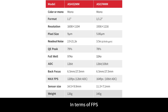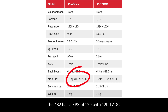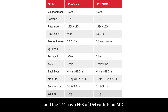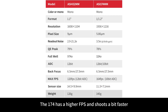In terms of frames per second, the ASI-432 has 120fps with a 12-bit ADC, and the ASI-174 has 164fps with a 10-bit ADC. The ASI-174 has a higher frames per second and shoots a bit faster, which is good for lucky imaging.